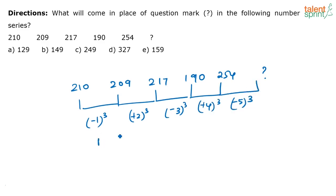Basically this is 1 cube is 1, correct? 2 cube is 8, minus 27, 64, 125. So 210 minus 1 is 209. 209 plus 8 is 217. 217 minus 27 is 190. 190 plus 64 is 254.